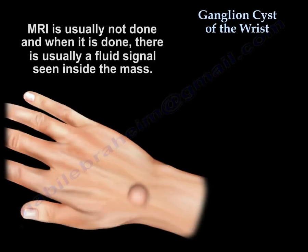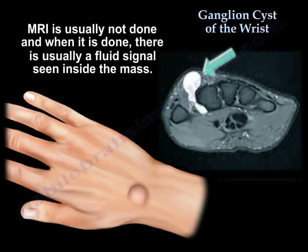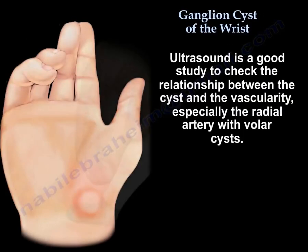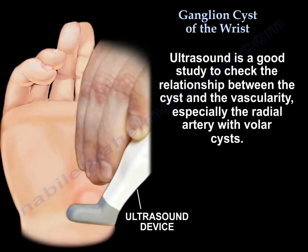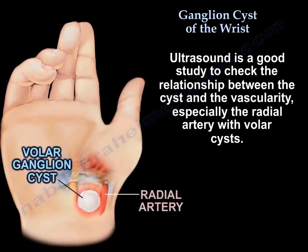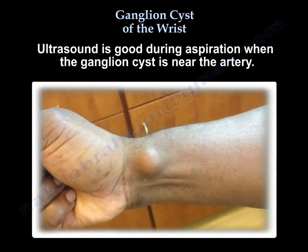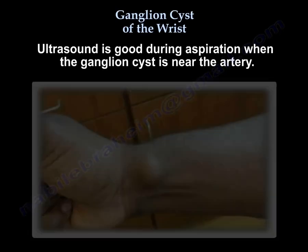MRI is usually not done, but if it is done, you will find fluid signal inside the mass. Ultrasound is a good study to check the relationship between the cyst and the vascularity, especially the radial artery — especially in volar cysts. Ultrasound is also good to guide aspiration when the ganglion cyst is near the artery.